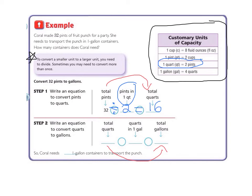We move on to step two. Write an equation to convert quarts to gallons. We are going to take that 16 that we just found and put it right here for our total quarts. We are going from quarts to gallons, again smaller to larger, so we are still dividing. We need to find out how many quarts are in one gallon. Let's look over at our chart, and we find our one gallon, and it says four quarts for one gallon. So we are going to divide by four. 16 divided by four equals four. Coral needs four one gallon containers to transport the punch.